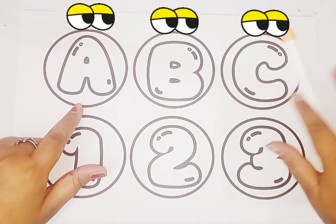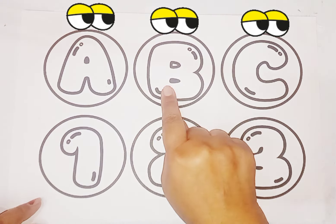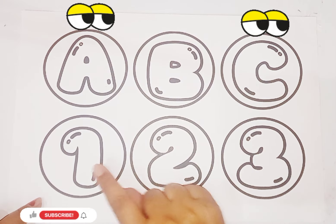So kids, now we learn some alphabets and numbers. Alphabet A, B, C. Number 1, 2, 3.